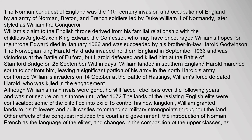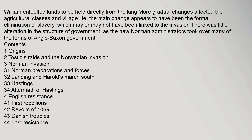Although William's main rivals were gone, he still faced rebellions over the following years and was not secure on his throne until after 1072. The lands of the resisting English elite were confiscated; some of the elite fled into exile. To control his new kingdom, William granted lands to his followers and built castles commanding military strongpoints throughout the land. Other effects of the conquest included changes to the court and government, the introduction of Norman French as the language of the elites, and changes in the composition of the upper classes. More gradual changes affected the agricultural classes and village life; the main change appears to have been the formal elimination of slavery, which may or may not have been linked to the invasion.